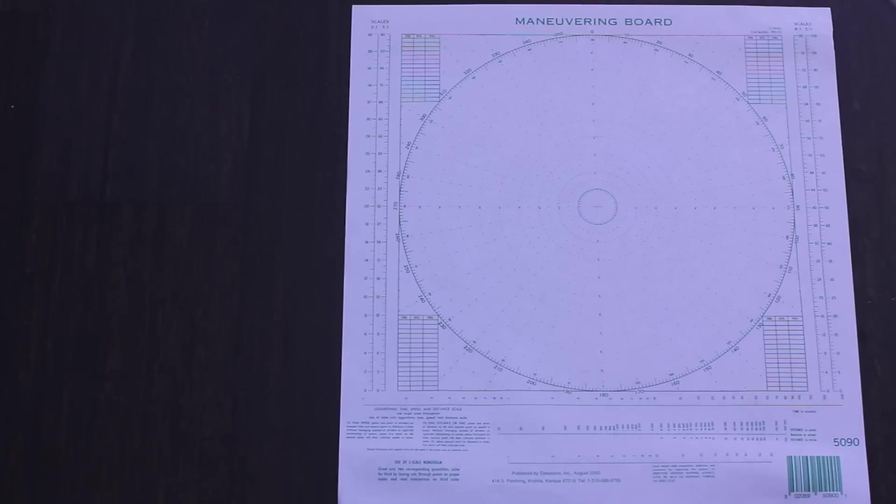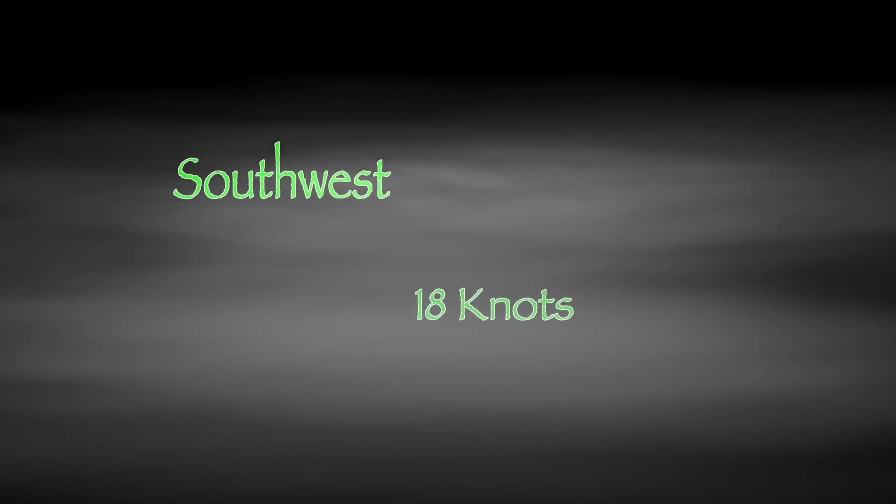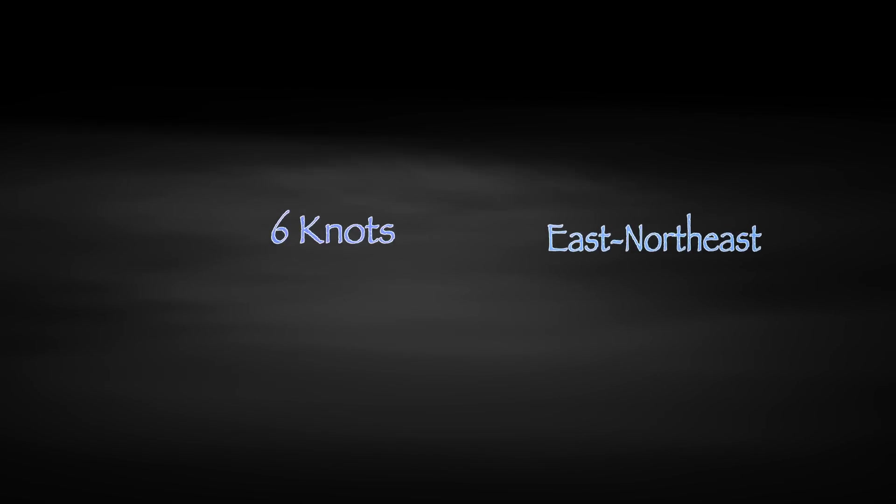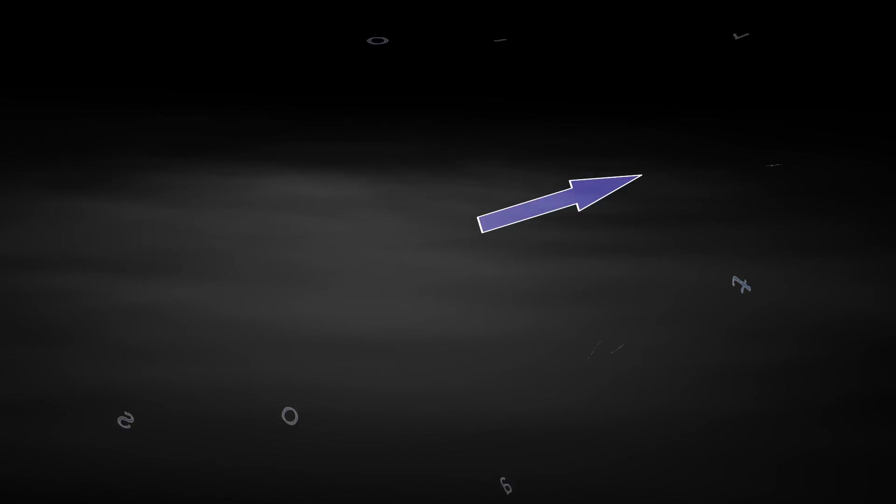One thing to note about mow boards and relative motion calculations in general, we'll be dealing with vectors. Vectors are representative of velocity, which is different than speed. A velocity is a time rate of motion in a specific orientation. In other words, a magnitude and a direction, like southwest at 18 knots, or east-northeast at 6 knots.